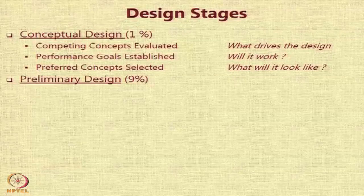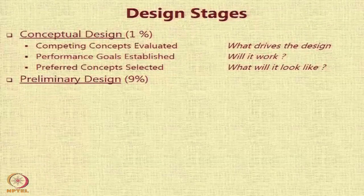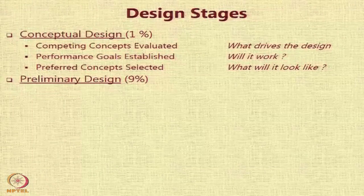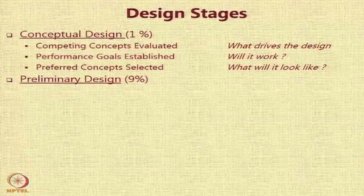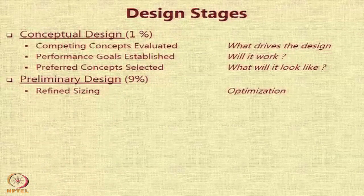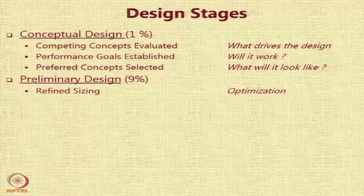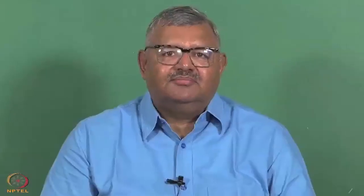The next stage is the primary design stage, which roughly encompasses nearly 9 percent of the total effort and time spent in the design. In this stage, we do refined sizing, and this refined sizing requires some optimization. A little bit of optimization may also be needed in the previous stage to determine which configuration is the best, since we need an objective to optimize. So optimization is used in the previous stage as well, but here it is at a far larger level.